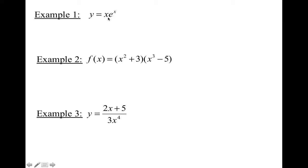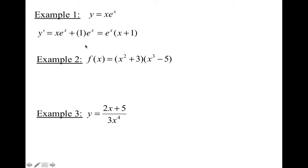I'm going to use the product rule: derivative of x — the first function — which is 1, times the original function e to the x, plus the first function x times the derivative of the second function, which is e to the x. It doesn't really matter what order you have them in because it's addition. So derivative of the first times the second, plus the first times the derivative of the second. You can factor out an e to the x if you want, but you don't have to. That's the derivative.